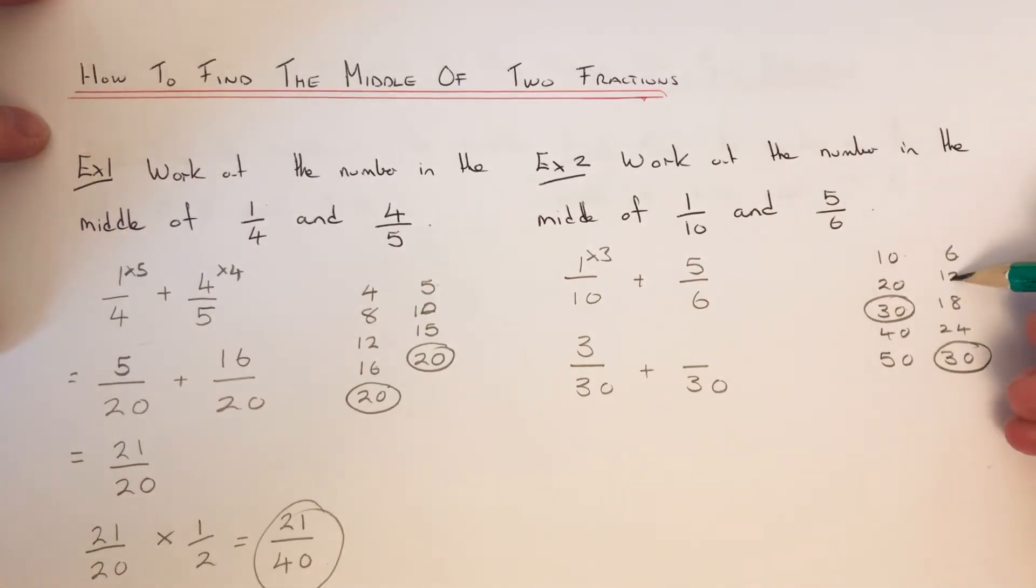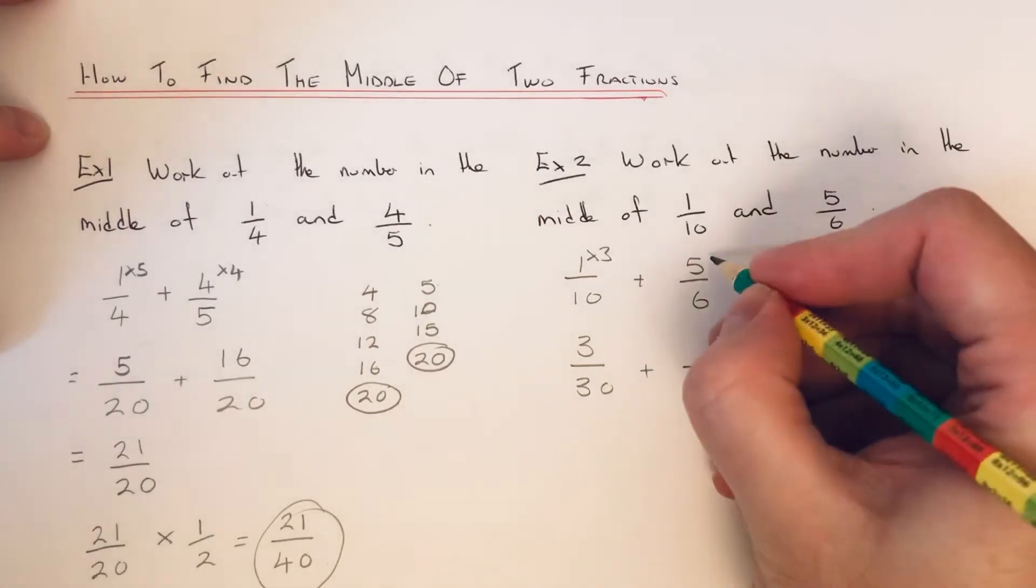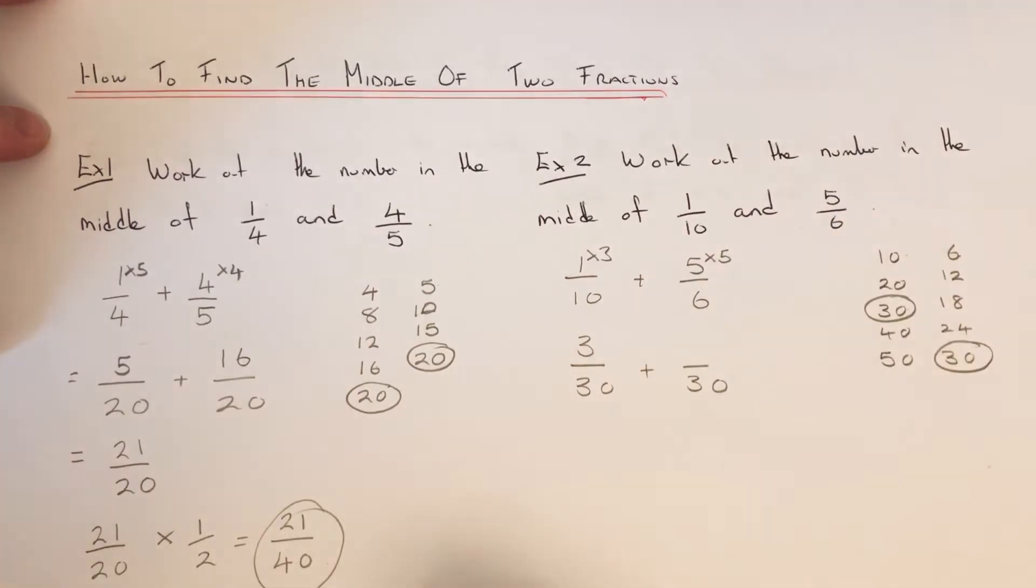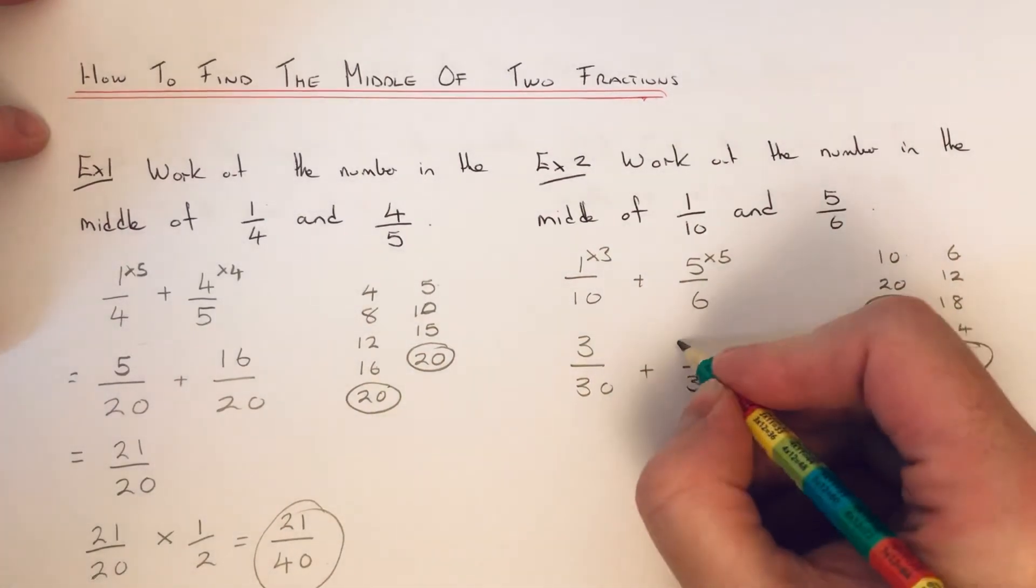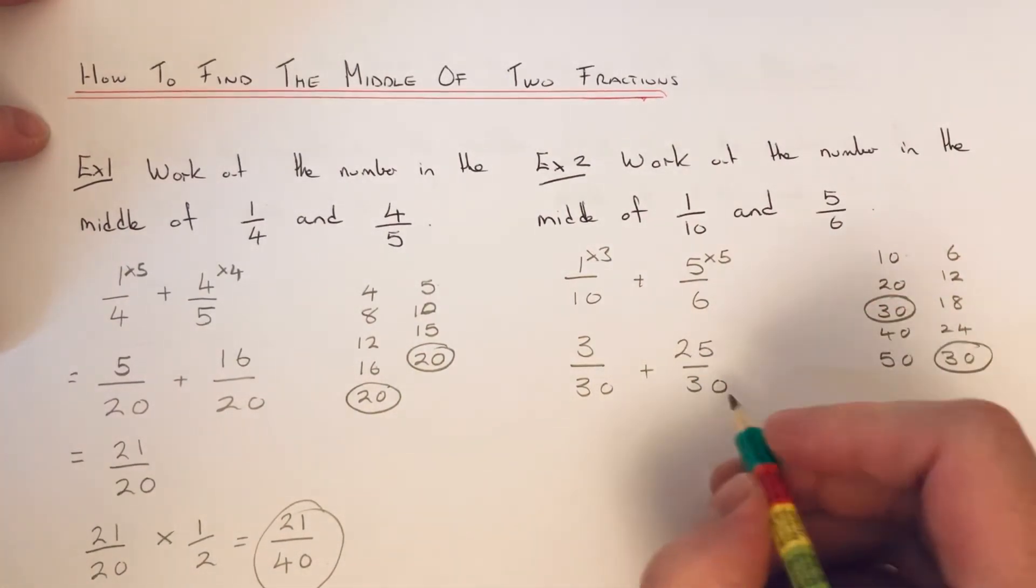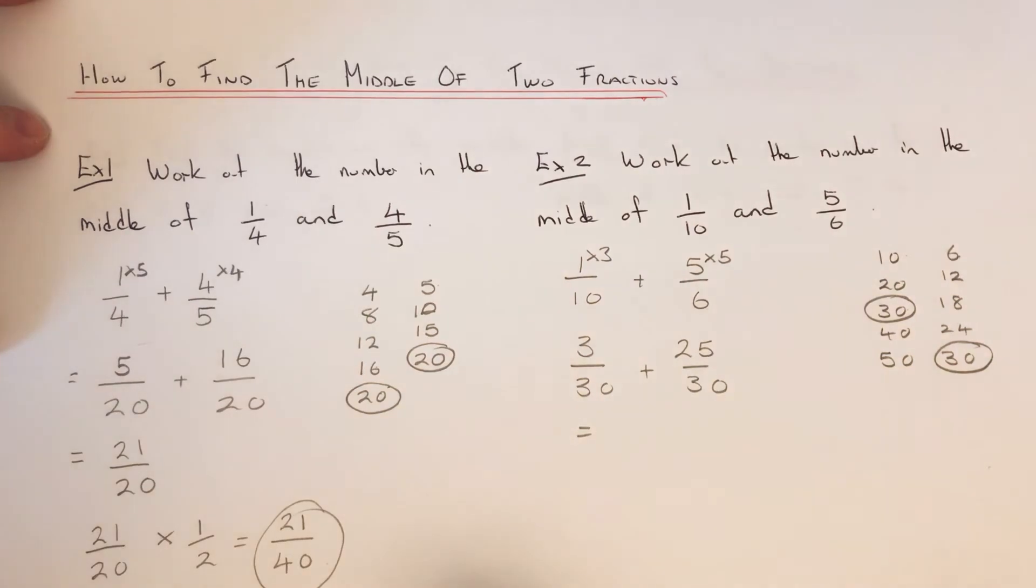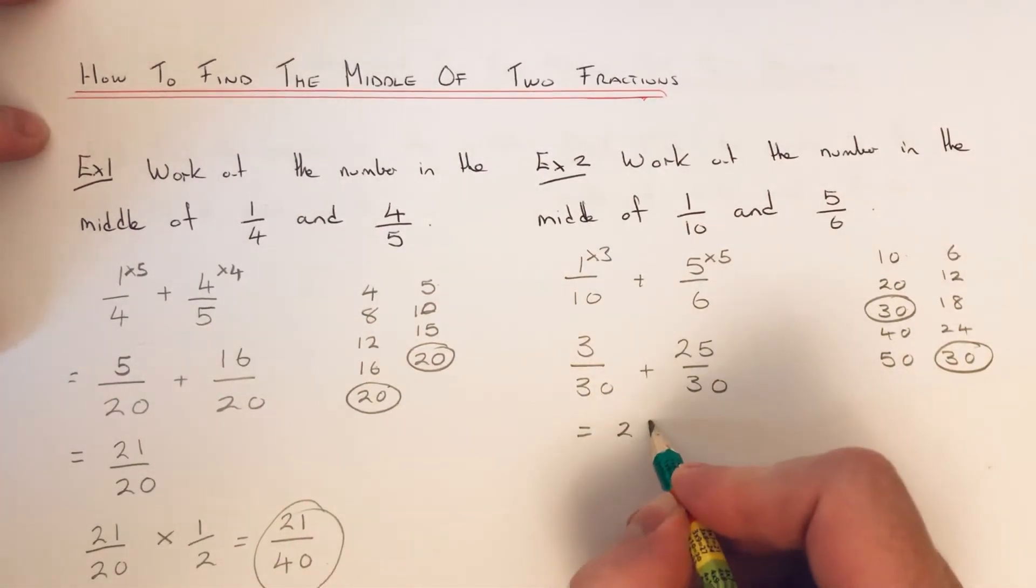Six goes into thirty one, two, three, four, five. So we times that number by five. Five fives is twenty-five. So we can now add the fractions together, which is twenty-eight over thirty.